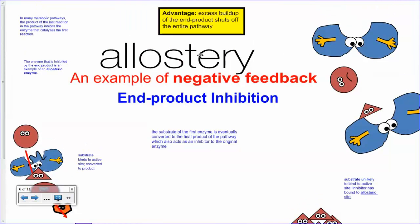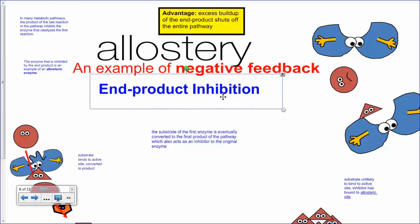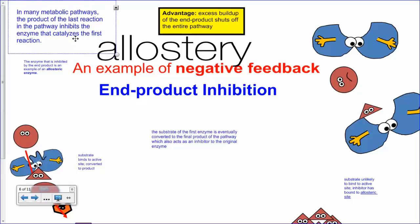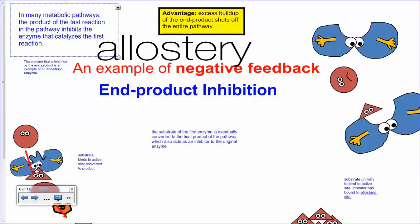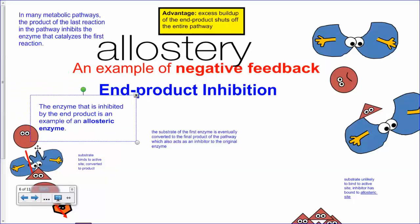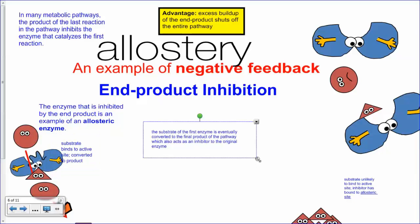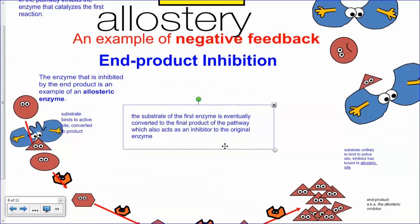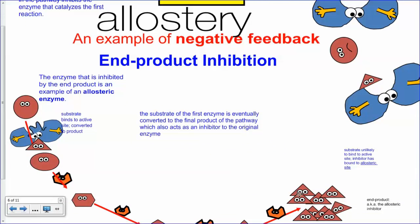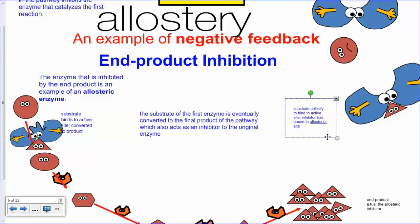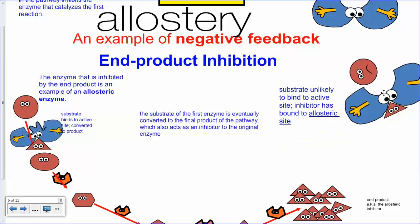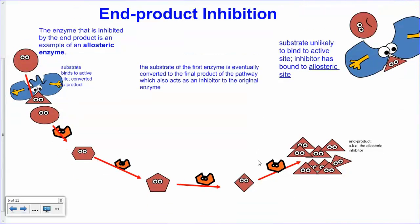Here are the important terms: this is called allostery, it's an example of negative feedback, and it's called end-product inhibition. In metabolic pathways, the product of the last reaction can inhibit only the first enzyme — the one that catalyzes the very first reaction. That enzyme is called the allosteric enzyme because it controls the fate of the rest of the pathway. The end product that does the inhibiting is called the allosteric inhibitor. When the inhibitor is bound, the substrate is unlikely to bind because the shape has changed.